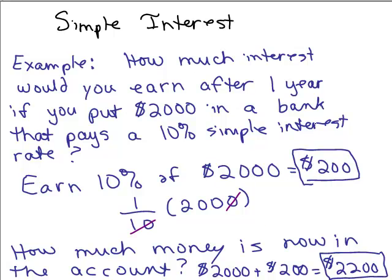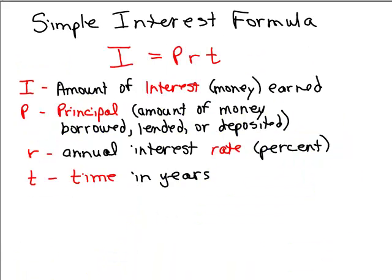So what we're going to go on to now is an actual formula called the simple interest formula. The formula is I equals PRT — P times R times T. I stands for interest, the amount of interest or money you're going to earn. P is principal, referring to the amount of money you borrowed, lent, or deposited in a bank.